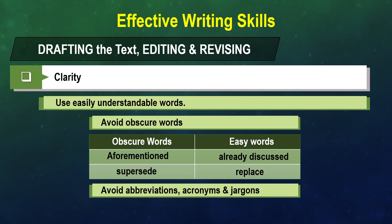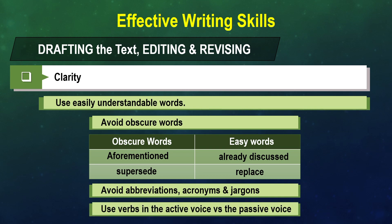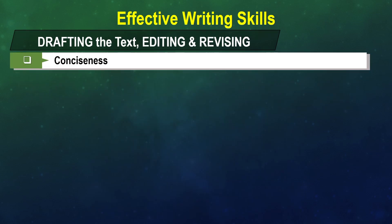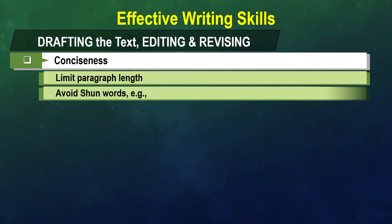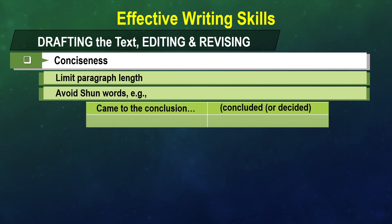Use verbs in the active voice rather than the passive voice. Check for conciseness — limit paragraph length to no more than five to six sentences. Break bigger paragraphs into smaller ones. Avoid words ending with a 'shun' sound; for example, instead of 'came to the conclusion', simply write 'concluded' or 'decided'.